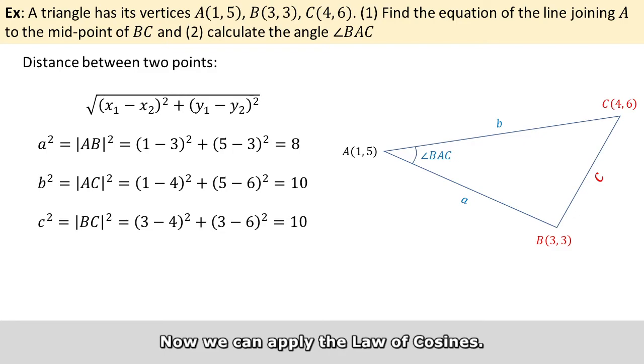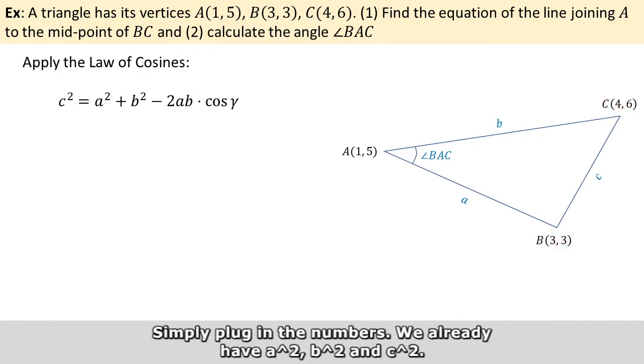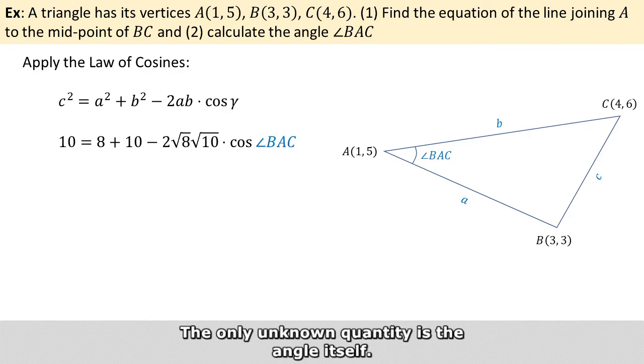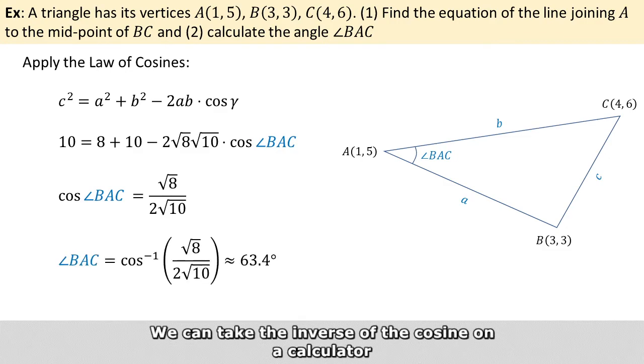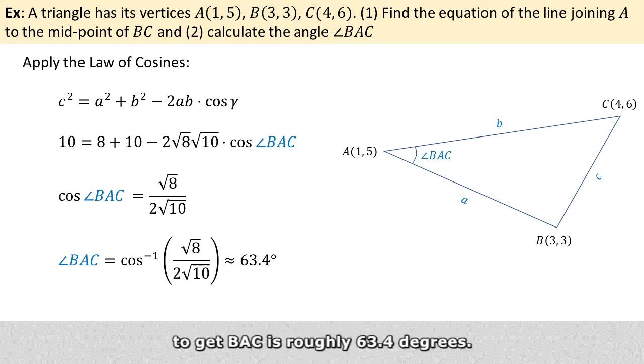Now we can apply the law of cosines. Simply plug in the numbers. We already have A squared, B squared, and C squared. The only unknown quantity is the angle itself. By arranging the expression, we get that the cosine of BAC equals square root of 8 over 2 times square root of 10. We can take the inverse of the cosine on the calculator to get that BAC is roughly 63.4 degrees.